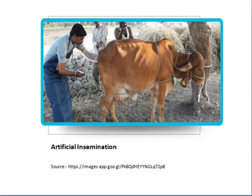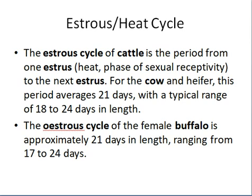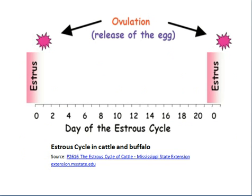This is usually done by a trained artificial insemination technician. Now, what are the typical signs of estrus or heat in cows? The estrous cycle of cattle is the period from one heat to the next. For the cow, this is 21 days, with a typical range of 18 to 24 days. Similarly, for buffalo it is also 21 days.